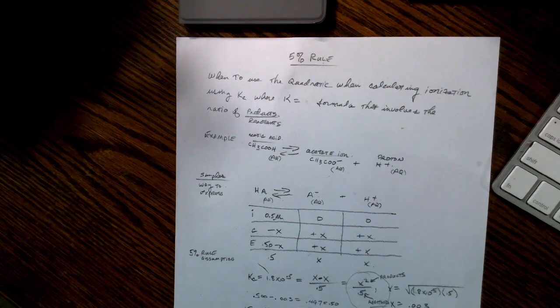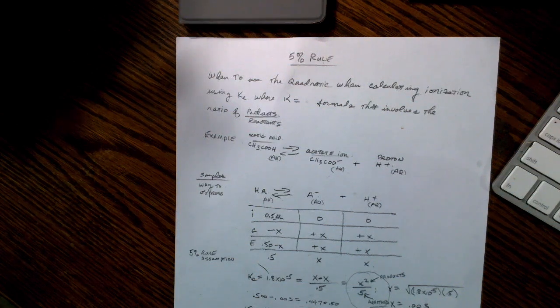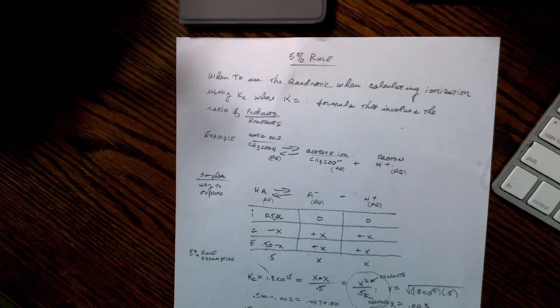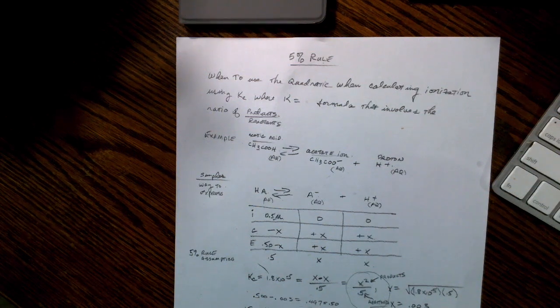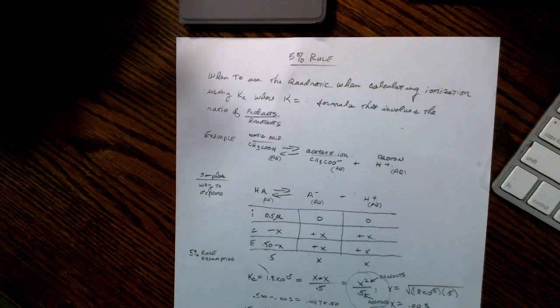This particular video is going to be about a 10-minute lecture talking about something called the 5% rule. The 5% rule is we're using equilibrium constants and their calculations in a way that eliminates the use of the quadratic equation, which can lengthen the process and leave you open to making mistakes.